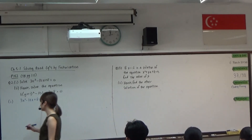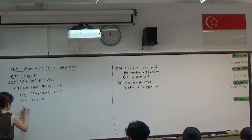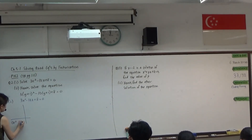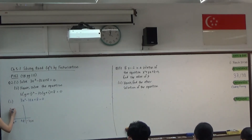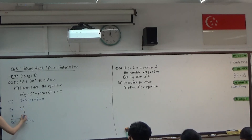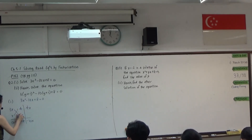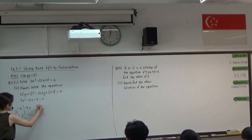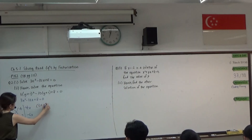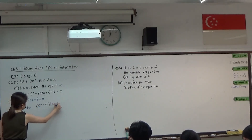So we do our cross pattern. We have 3x squared minus 8 minus 10x. We have 3x and x. Okay, 4 and then negative 2 here. In order to get negative 10x, it will be negative, negative. So our factorization will be (3x minus 4) and (x minus 2).